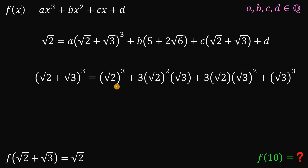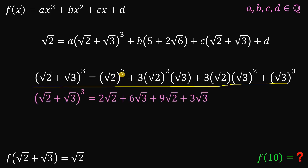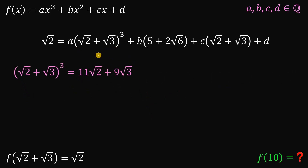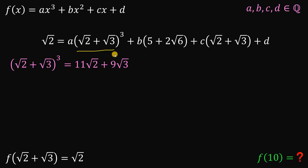Now let's focus on the cubed expression and simplify. Square root of 2 raised to the power of 3 is 2 times square root of 2. Then 3 times square root of 2 squared times square root of 3 is 3 times 2 times square root of 3, or simply 6 times square root of 3. Next, 3 times square root of 3 squared times square root of 2 is 9 times square root of 2. And square root of 3 cubed is 3 times square root of 3. Combining like terms, this is equivalent to 11 times square root of 2 plus 9 times square root of 3. So we can replace the cubed term with this equivalent.